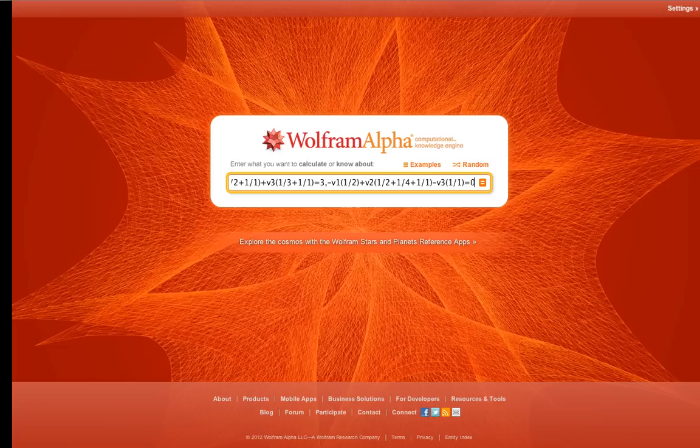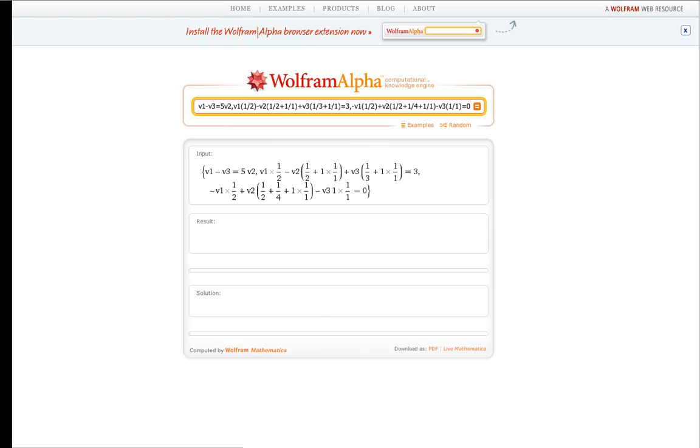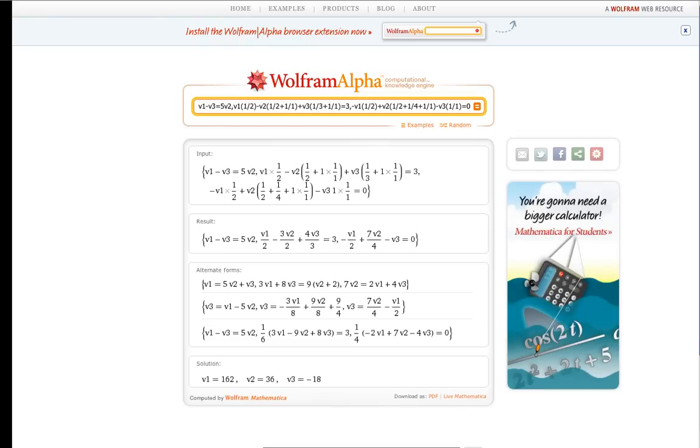So hopefully if we got this right, we just hit return, and WolframAlpha does a lot of solving for us, and there you have it. We end up with V1 equal to 162 volts, V2 is 36 volts, and V3 is minus 18 volts.